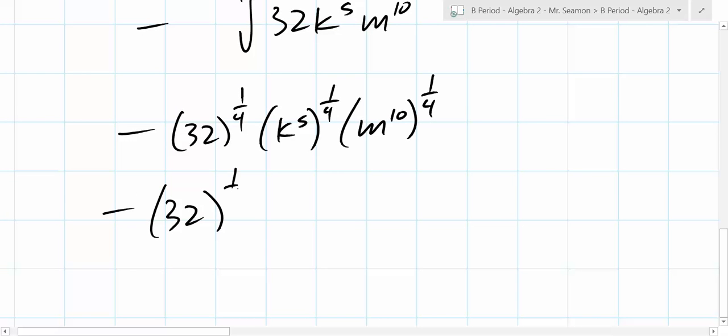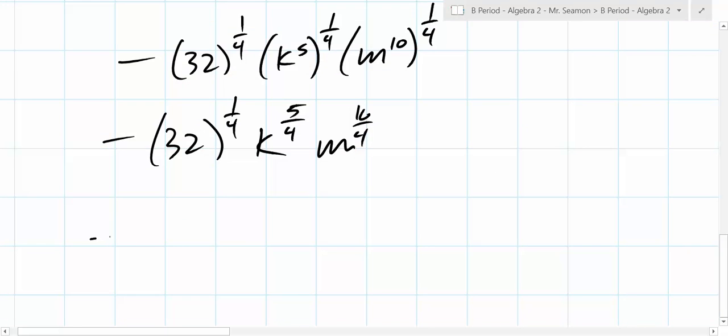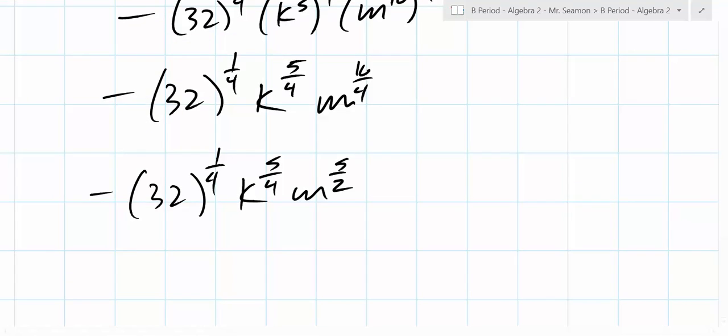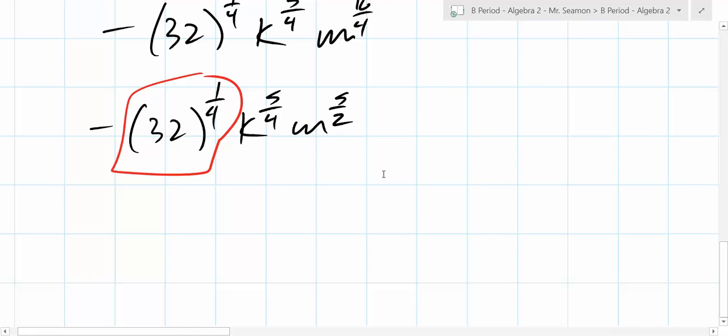Yeah, 32 to the 1/4. So it's K to the 5/4, M to the 10/4. But what is 10/4? 5 over 2. Yeah, so you get K to the 5/4 and M to the 5/2. You're not quite done yet because you can do something to this. Let's factor 32. It's not totally clean, but it gets a lot nicer. 8, 4. So you can factor out a 4 and an 8. But what does 4 factor into? 2, 2, 2 and 2, right?